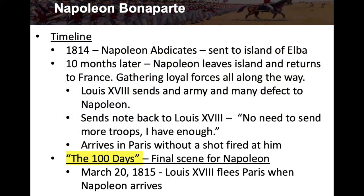Ten months later, Napoleon left the island of Elba and returned to France, gathering loyal forces along the way. Louis the 18th, the monarch in France, sent an army to stop Napoleon, but many of his soldiers defected and joined Napoleon. Napoleon sent a note back to Louis the 18th saying, 'No need to send more troops — I have enough,' meaning the troops sent to stop him had joined him instead. Napoleon showed up in Paris and retook control of the country without a shot being fired.